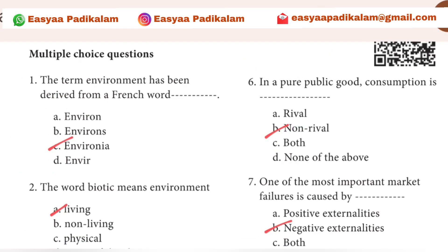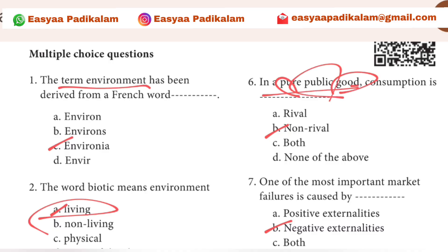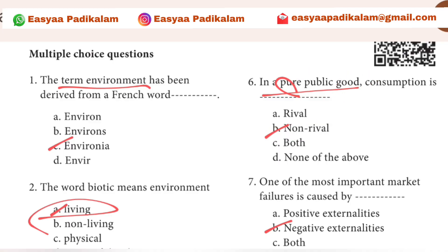6th question: in a pure public good, consumption is pure good under public law. What will happen? I am non-rival. I am a pure good. I am non-excludable.